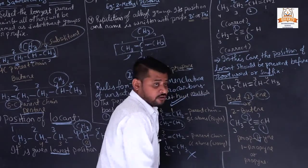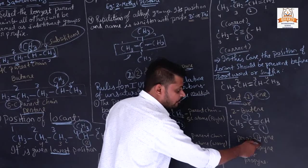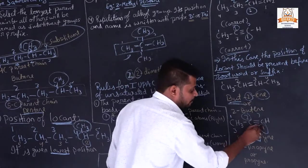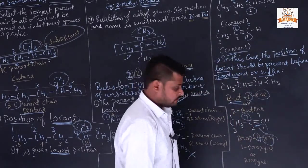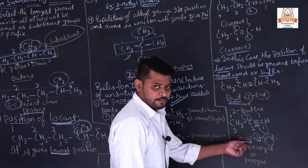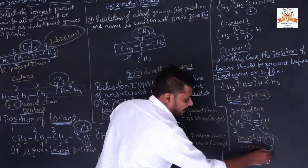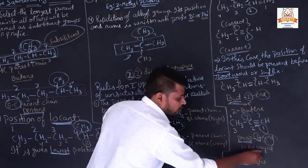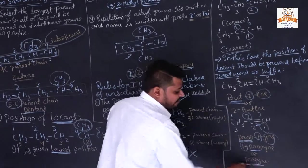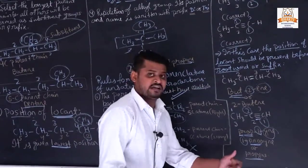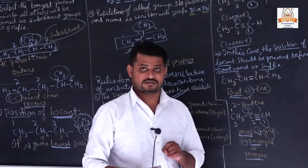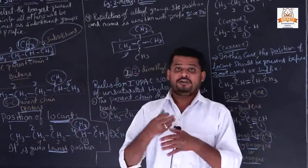The triple bond is at position 1 and there are 3 carbon atoms, so it is prop-1-yne, or we can write 1-propyne. Another way: since the position is 1 we can also write simply propyne without indicating the position, and that is also acceptable. If the position were 2 or 3, we must write the position. Did you understand how we name hydrocarbons?